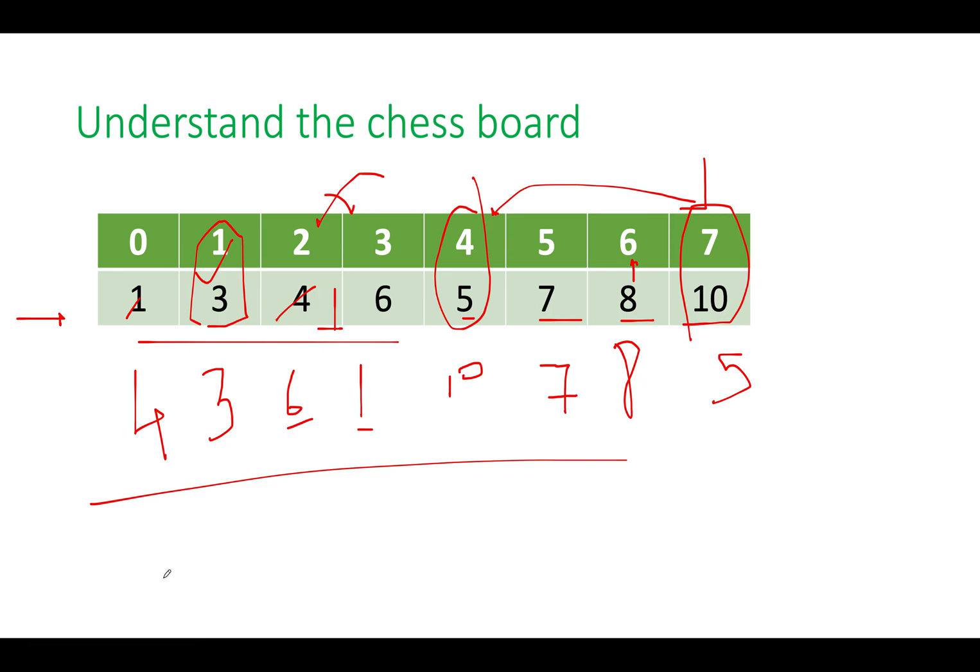On the very first and the naive approach that comes to everybody's mind is to keep track of even elements in the array. Also simultaneously let's keep track of odd elements in the array. So 1 happens to be an odd element. 3 happens to be an odd element. We will add 3 here. 4 happens to be an even element. We add 4 here. 6 here. 5 here. 7 here. 8 and 10 here. We have segregated even elements. So these are even and these are odd.